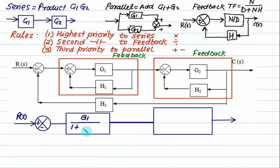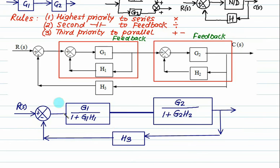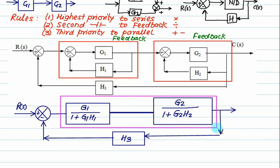Numerator is G1, feedback is H1. For this one, numerator is G2 upon 1. Opposite sign of feedback is plus. Numerator is G2, feedback is H2. In both cases denominator is 1. And then we have H3 left. So right now we have these two blocks which are in series. So let's perform the series operation. Series means product. Everything inside this will vanish and the answer will be the product.